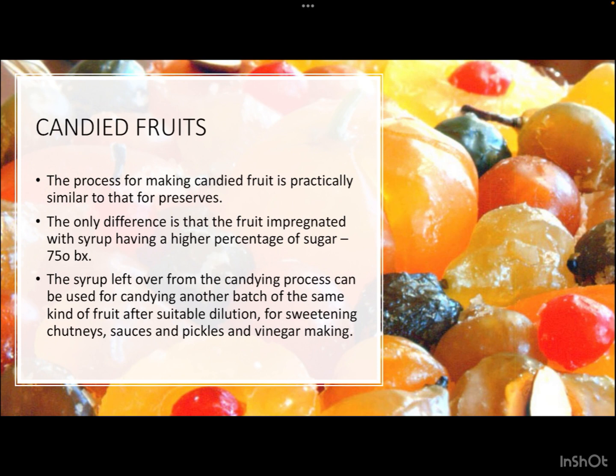The process for making candied fruit is practically similar to that for preserves — whole fruits or large chunks are preserved for longer times. The only difference is that the fruit is impregnated with syrup having a higher percentage of sugar, that is 75 degree Brix. The syrup left over from the candying process can be used for candying another batch of the same kind of fruit after suitable dilution, or for sweetening chutneys, sauces, pickles, and even for vinegar making.